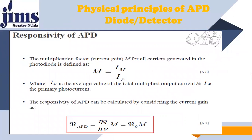An important factor of any detector is its responsivity, which we already defined in the previous lecture. It is the ratio of output to input — the output is a current and the input is optical power or optical energy. The unit of responsivity is ampere per watt.